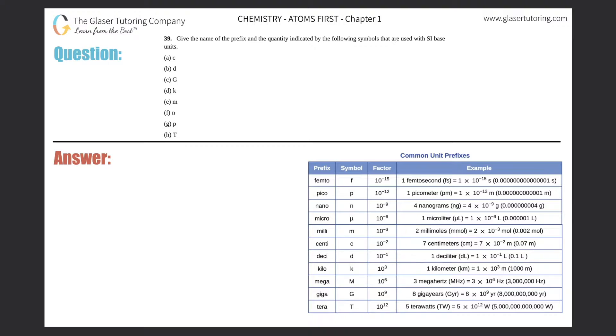Number 39: Give the name of the prefix and the quantity indicated by the following symbols that are used with SI base units. I see options a through h, so like always, let's do the alphabet.